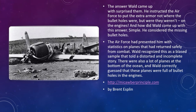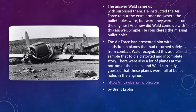The answer Wald came up with surprised them. He instructed the Air Force to put the extra armor not where the bullet holes were, but where they weren't — on the engines. The engines had the smallest number of bullets per square foot. He considered the missing bullet holes, recognizing this as a biased sample. The planes shown to him had returned safely — beaten up, but they did return. The ones that didn't come back, at the bottom of the ocean, were full of bullet holes in the engines. The planes that returned were the ones that didn't have many engine hits. So he said: protect the engine. The rest of the plane can take the hit and still fly home.